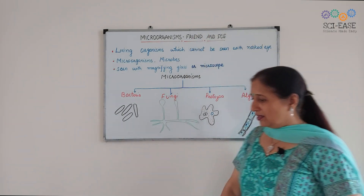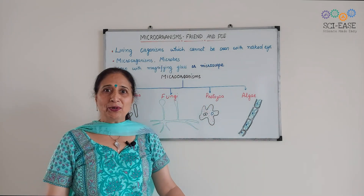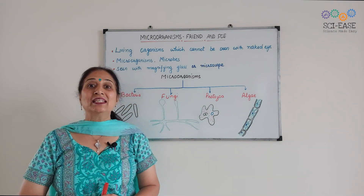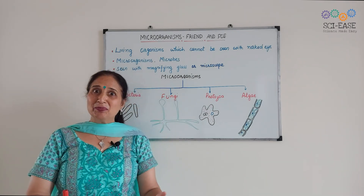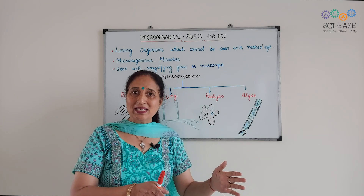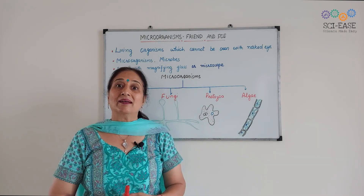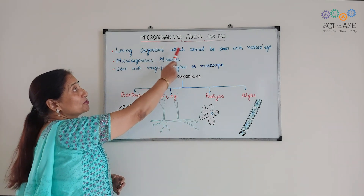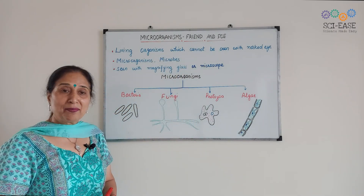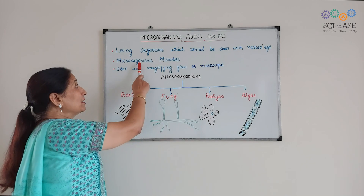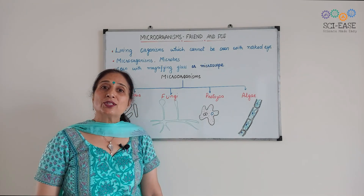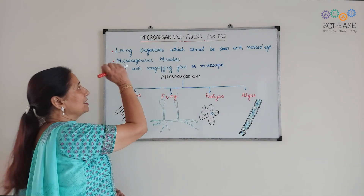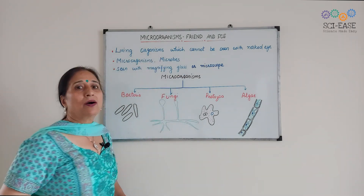Friend and foe — what does this mean? Friends help you, and foe means enemy. So, some micro-organisms are useful to us and some micro-organisms are harmful to us. Living organisms which cannot be seen with the naked eye are micro-organisms. Micro-organisms are also known as microbes, and they can be seen with the help of a magnifying glass or microscope.